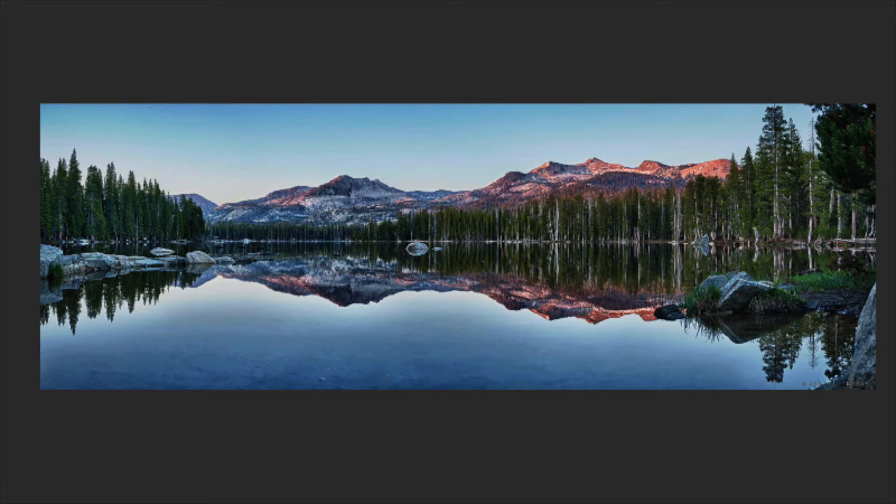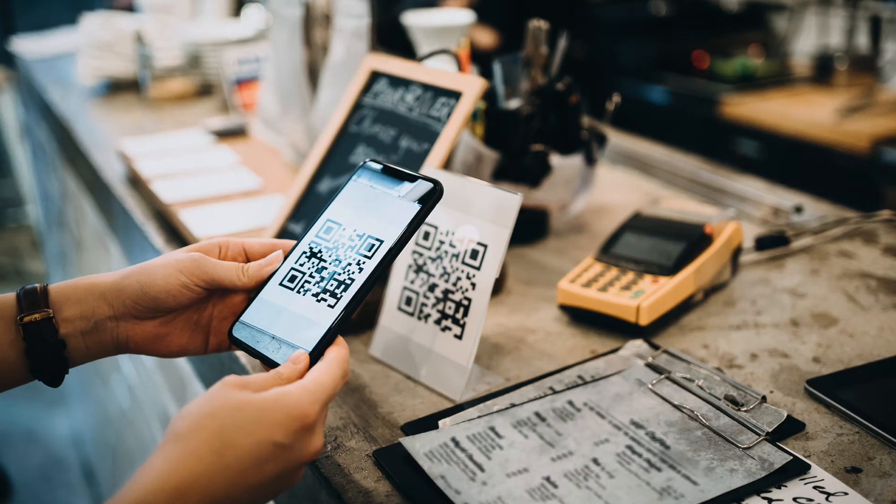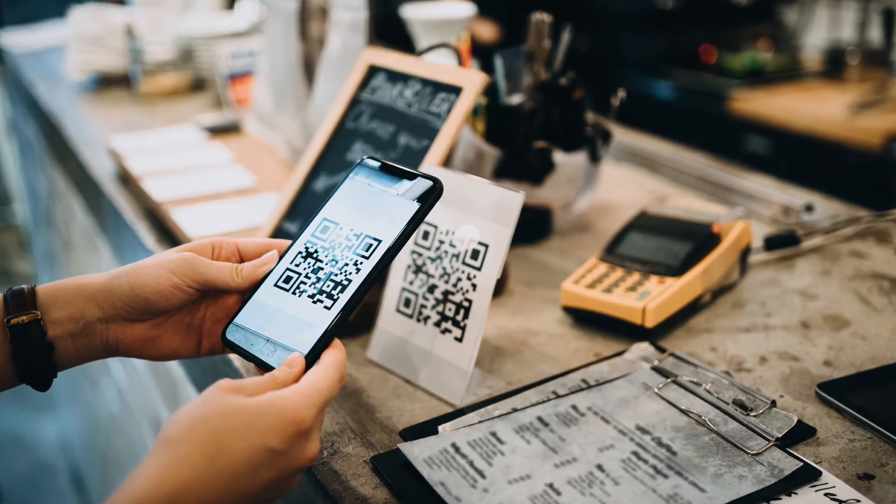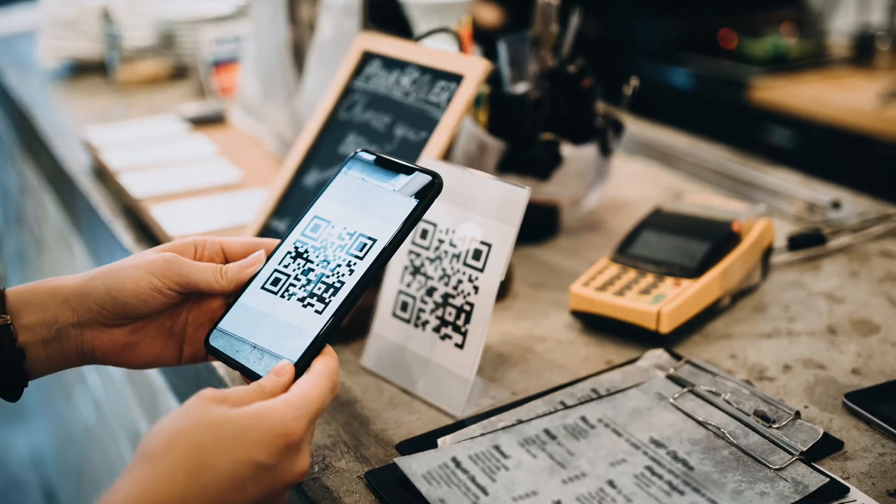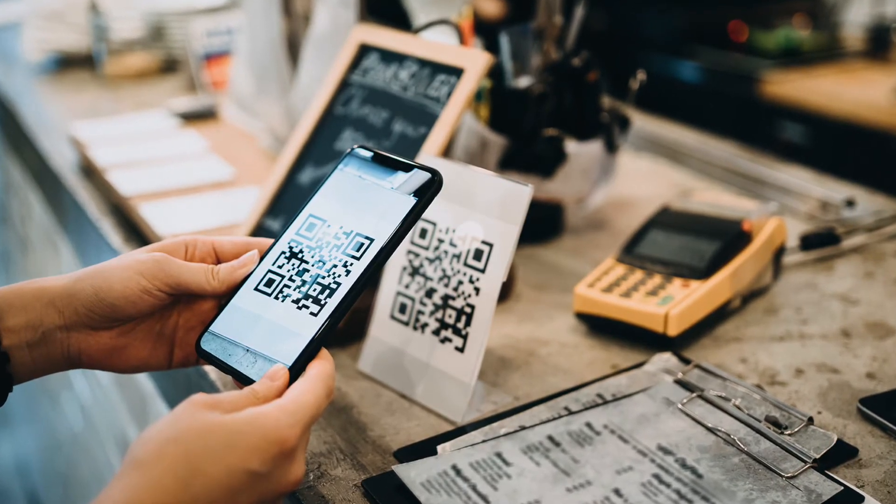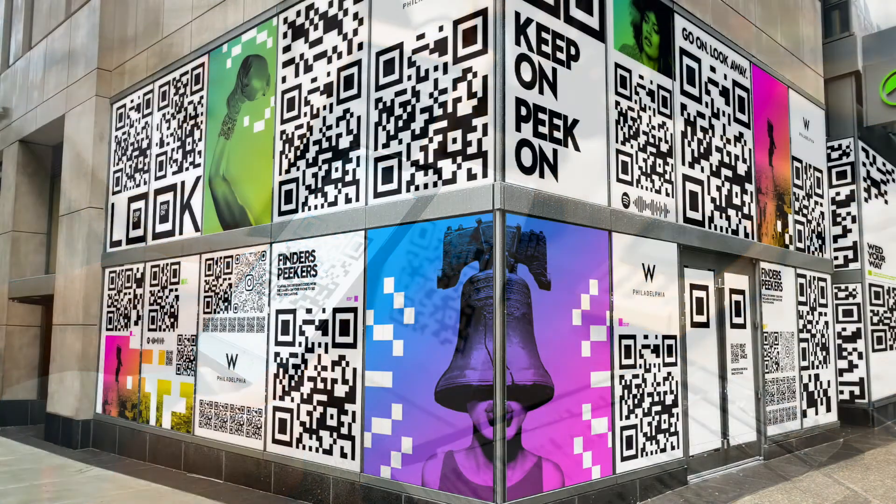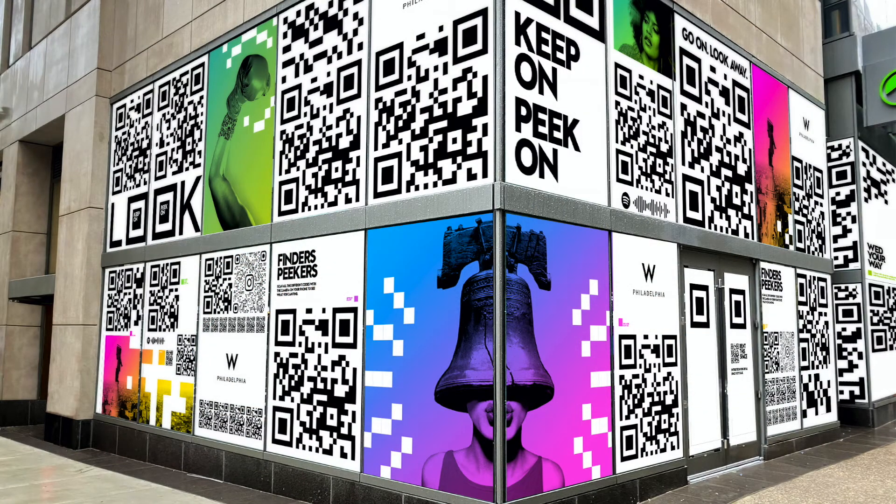For example, when you want to read a QR code, usually you need to manually align the phone with the code so the phone can read it. But if you're in a rush and you just take a picture, the code could be distorted because it was taken from a different angle.